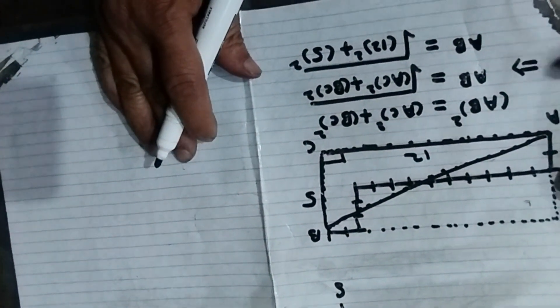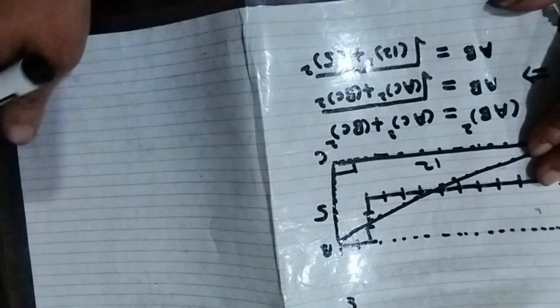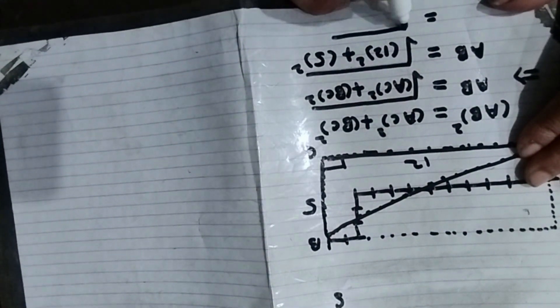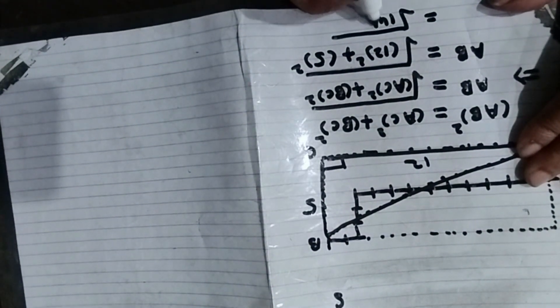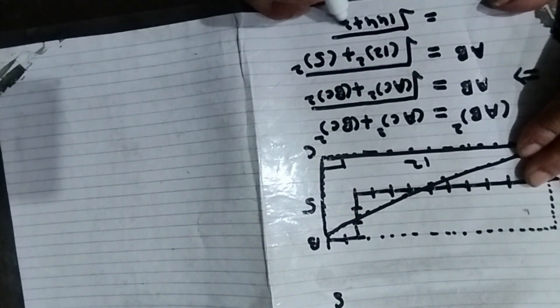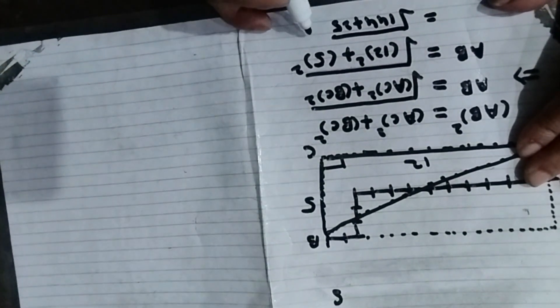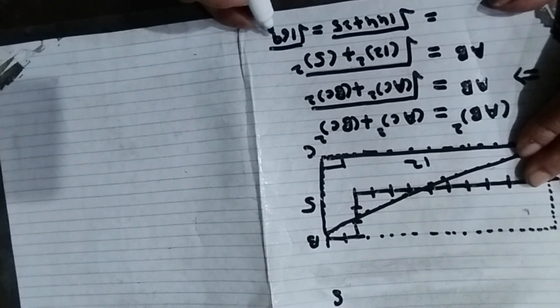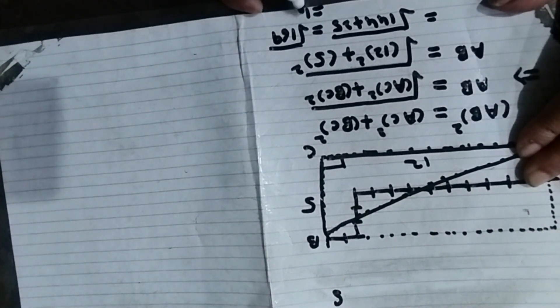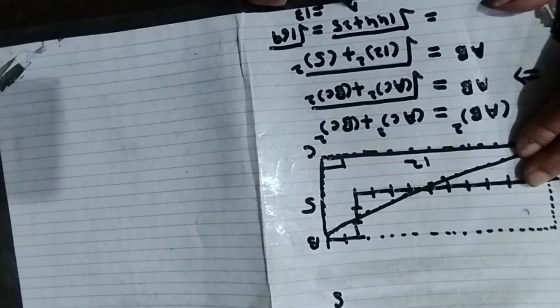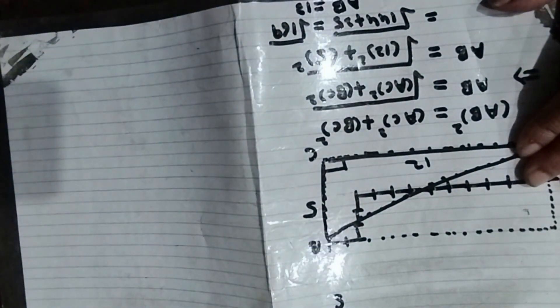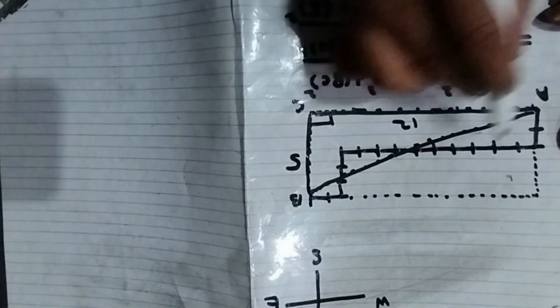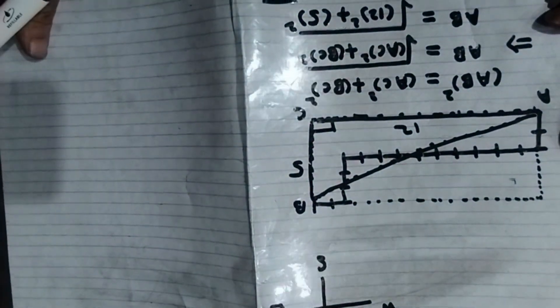Now we solve it. It will be equal to 144 plus 25 equal to 169 and this will be equal to 13. So AB is equal to 13. It means distance from A to B is 13 kilometers.